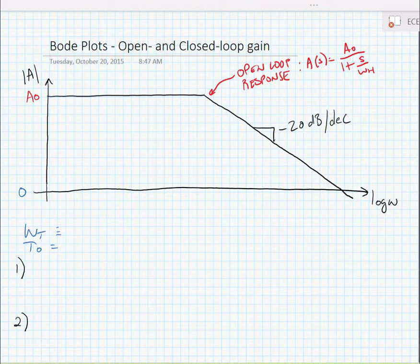A sub 0 is the DC gain of the op-amp, and omega h is the high frequency pole of the op-amp.